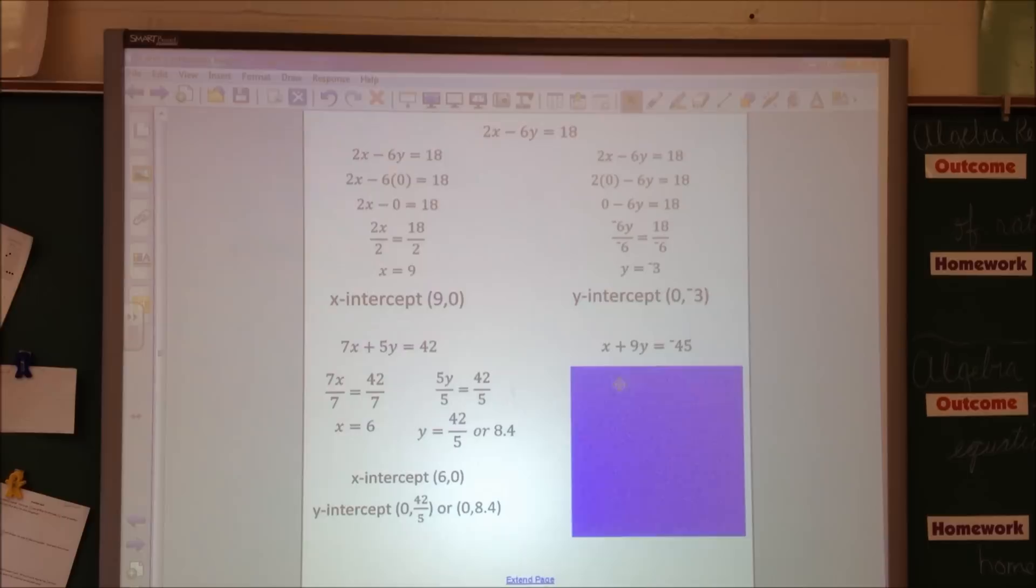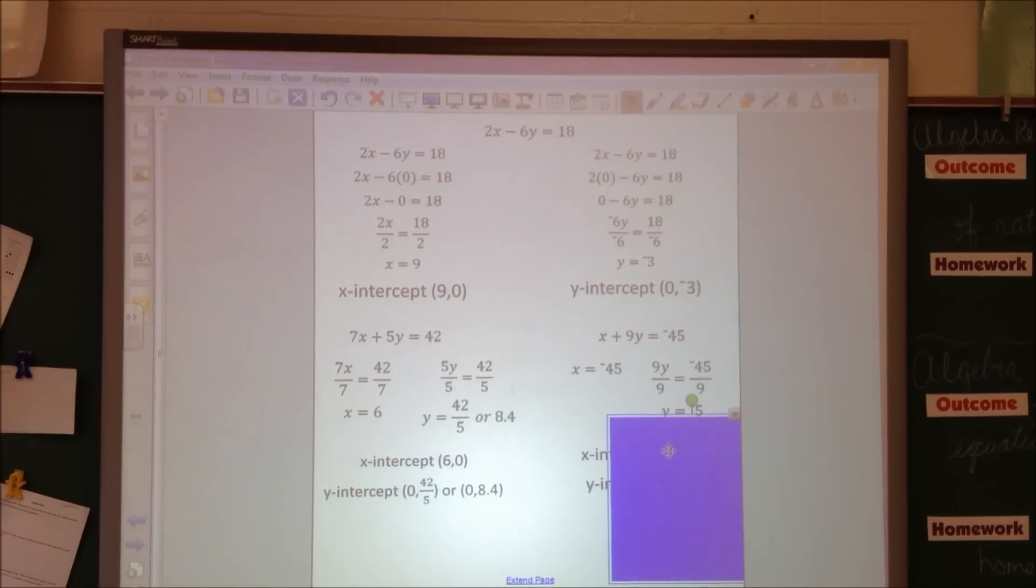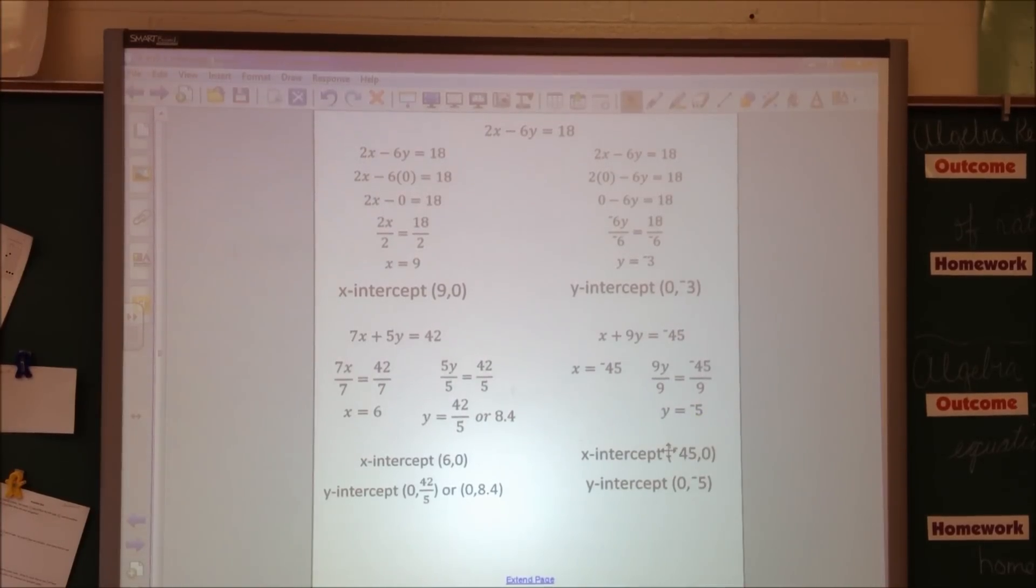I'm going to do that fast trick again for this one. Remember, x-intercept, y is equal to 0. Cover that up, and it says x equals negative 45. That was really easy. For the y-intercept, x is equal to 0, so I cover that up, and it says 9y equals negative 45. Divide both sides by 9, and I get y equals negative 5. So those are my x and y-intercepts when I'm given an equation.